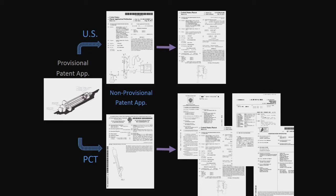A follow-up question: if data is presented at a conference, would that leave it unprotected on the international side? As long as the provisional covers what they're presenting on, then it protects them. But if they are presenting before they have filed for whatever they're presenting on, then it doesn't protect that.